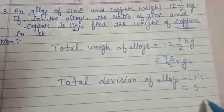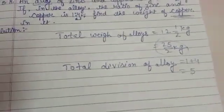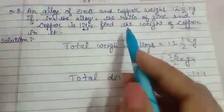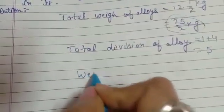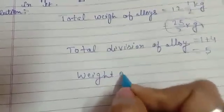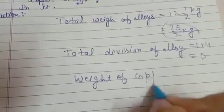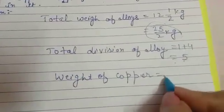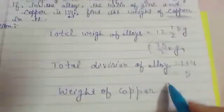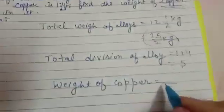Now we have to find the weight of copper. Weight of copper - this is the total division, write it into the denominator, and part of copper is 4, write in numerator, multiplied by the weight of total alloy that is 25 over 2.